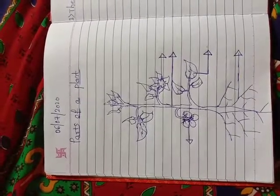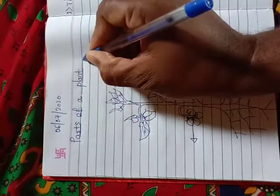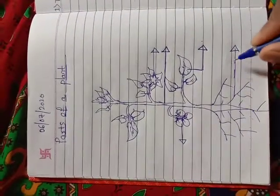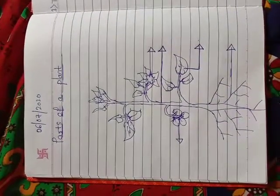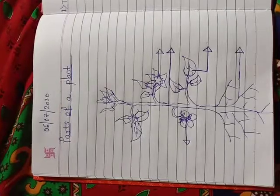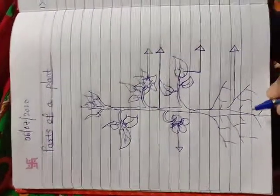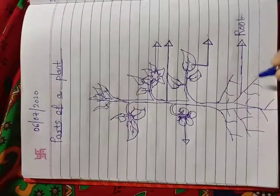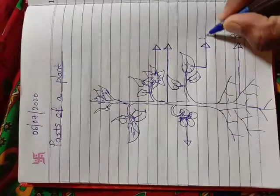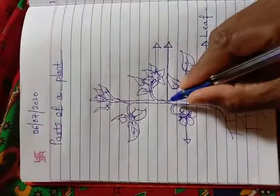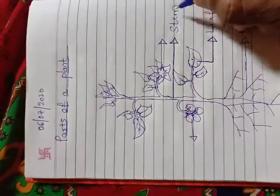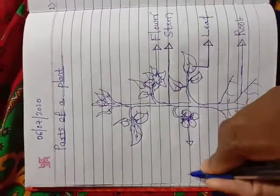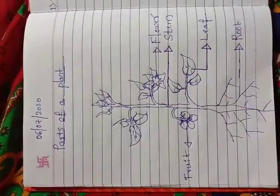This class we will learn about parts of a plant. Just look here — I have drawn one plant diagram. These are the parts of the plant. Now, how to write correctly their names: this one is called root, this one is leaf, this one is stem, this one is flower, and this one is fruit.